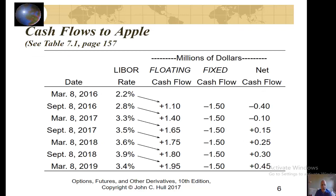Here is an example of those cash flows. All of the fixed rate side cash flows would be 3% times $100 million divided by 2, or $1.5 million.